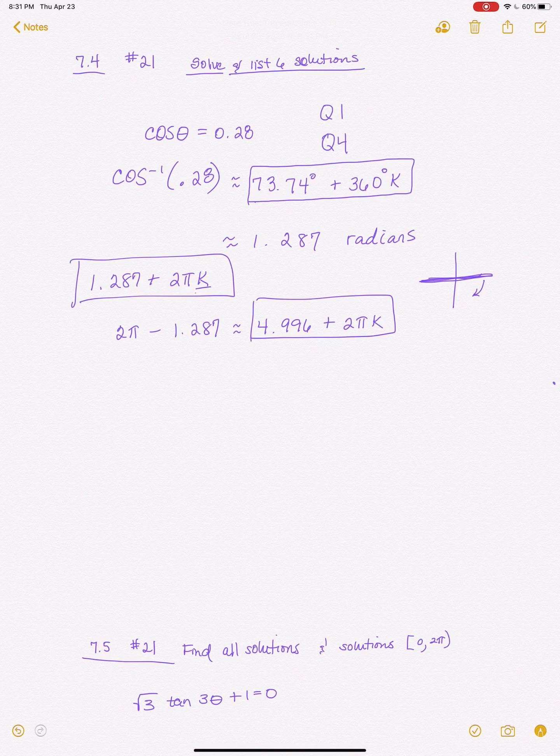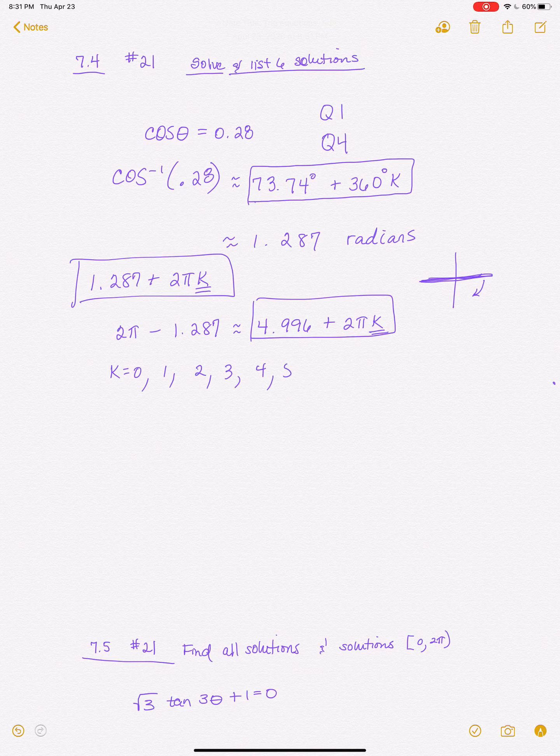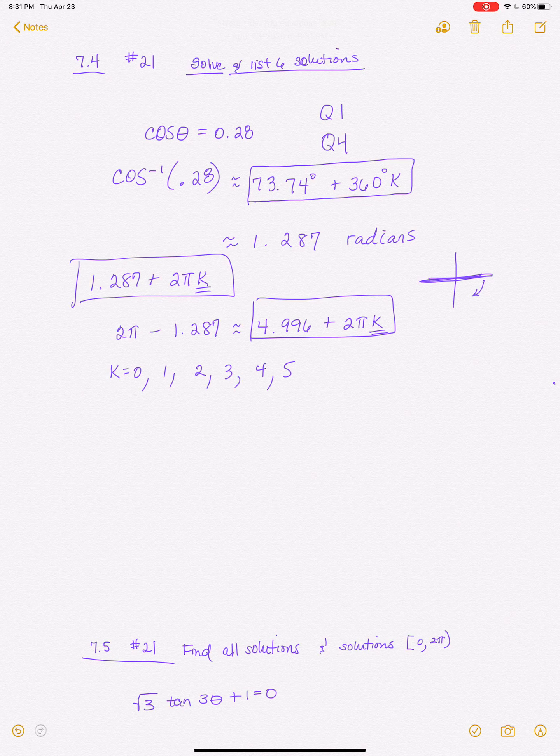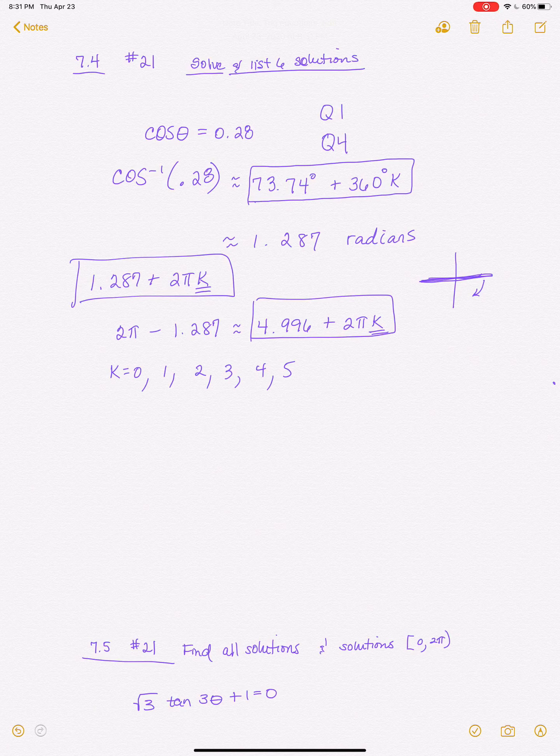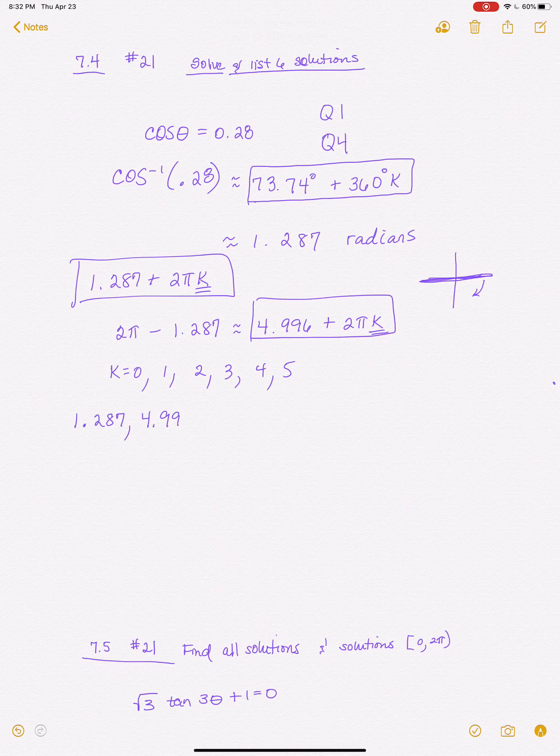To do that, I just plug in values for K. So I'm going to plug in K equals 0, 1, 2, 3, 4, and 5. And you could certainly do negative 1, negative 2. You could do it like that as well. Alright, so let's see what happens when I plug in 0. Well, if I plug in 0, that 2 pi is 0 because anything times 0 is 0. So two of my solutions are going to be 1.287 and 4.996.